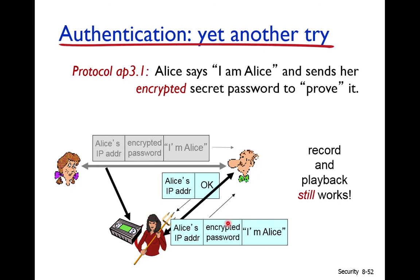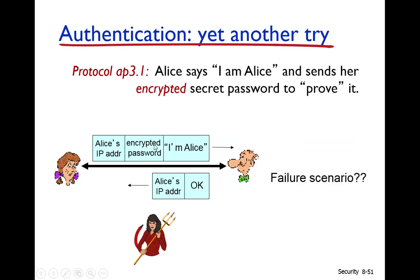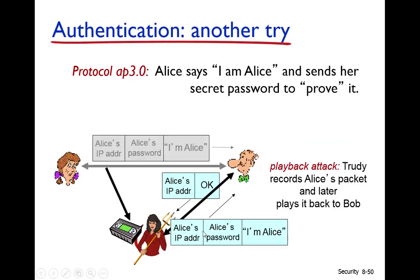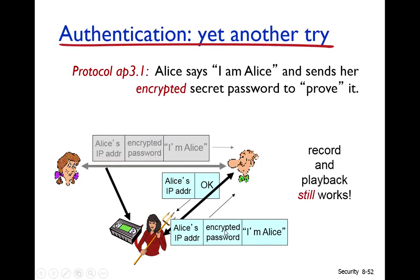Bob cannot tell this is not a new message — it is a previous message that was copied by Trudy from Alice and Bob's communication. In the previous protocol, Trudy could generate new messages with new passwords; here she cannot because the encrypted password is unknown. Instead she replays the stored encrypted message — this is called a playback attack. Protocol AP 3.1 does not work.